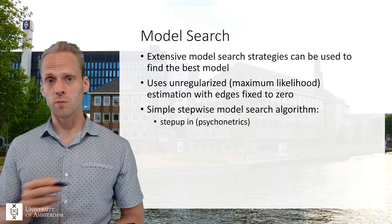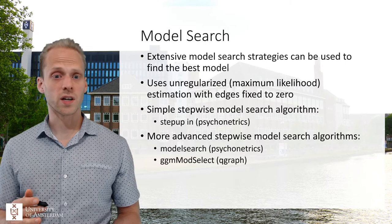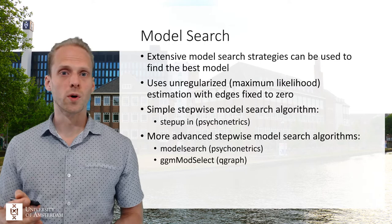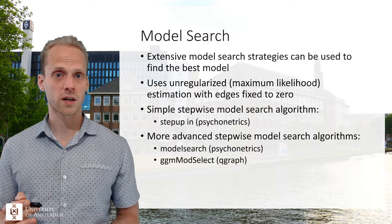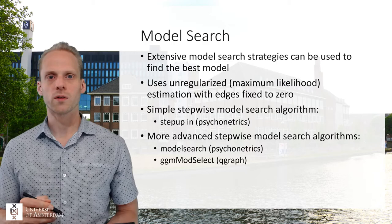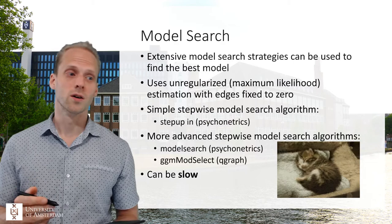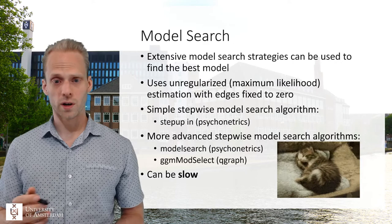We add that edge and keep doing it until we optimize the BIC. There are also more advanced stepwise model search algorithms implemented in the model search function for psychonetrics and the ggmodselect function in Qgraph. There are also a few others, for example in the ggmnonreg package, and you can think of these functions yourself as well. The main downside is that this can be really, really slow, so get ready to feel sleepy, especially if you have more than about 25 nodes, because then these algorithms can be extremely slow.